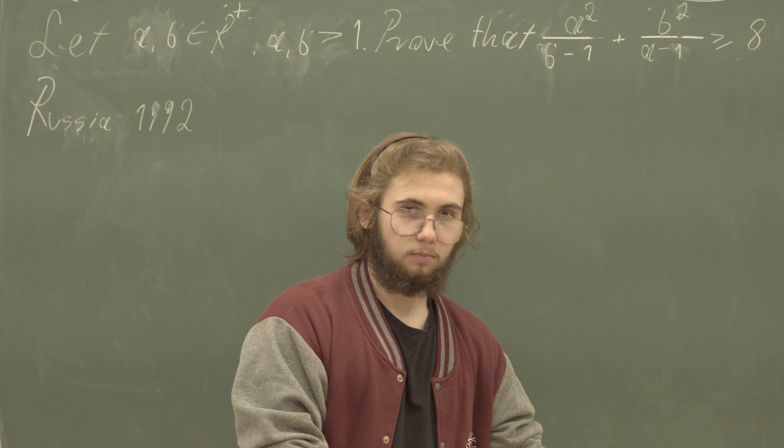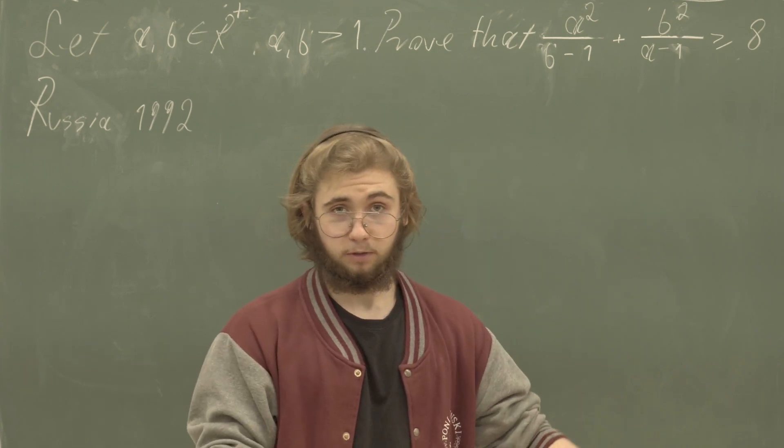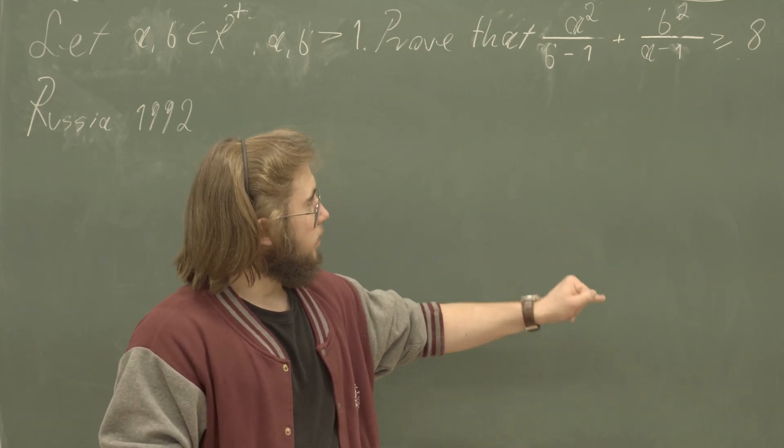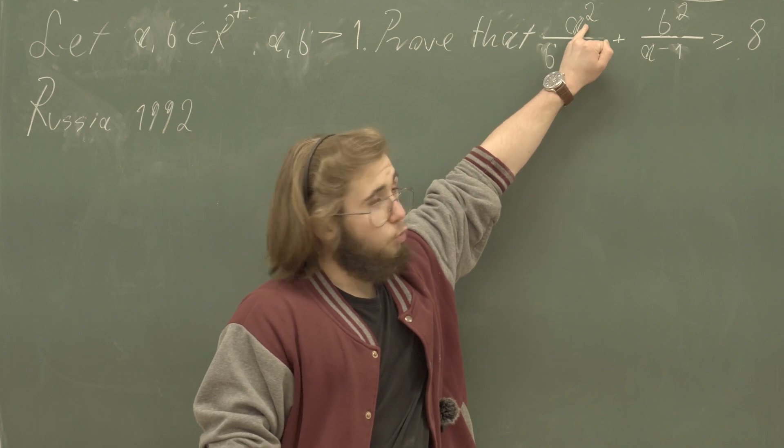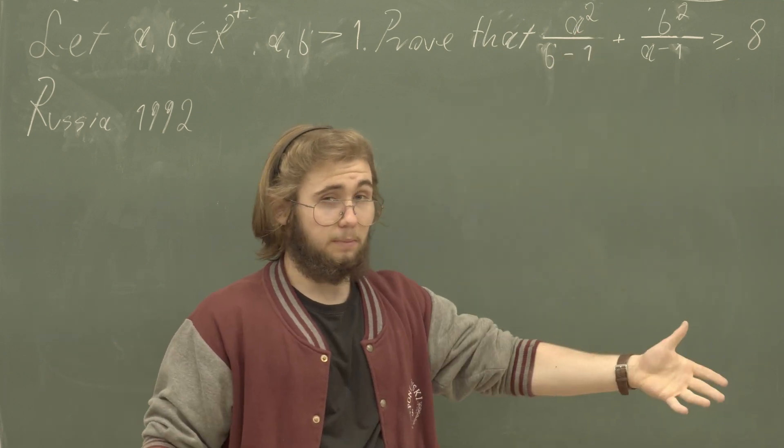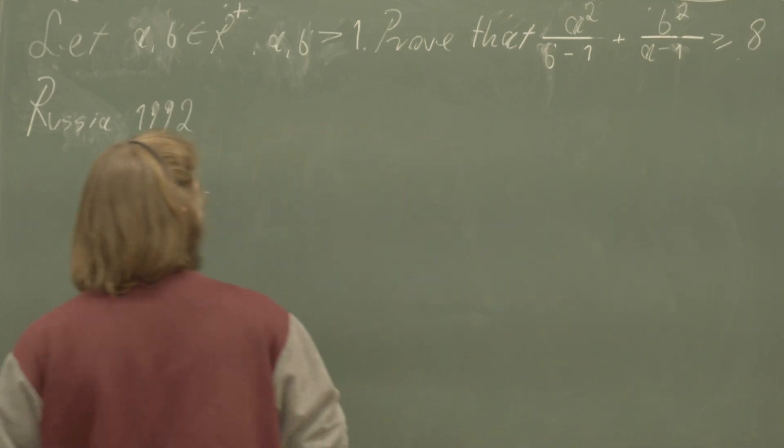So what do we have in this problem? Well, we have fractions in this problem, which is awful because we hate fractions. But what do we also have in this problem? We have squares in the numerators of those fractions, so maybe applying Cauchy-Schwarz inequality will simplify things a bit.